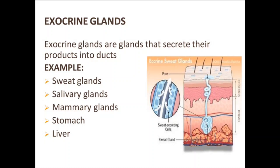In these sweat-secreting cells, the secretion comes out of the cells, travels through the duct, exits through the pore of our skin, and the sweating process releases the product out of our body.